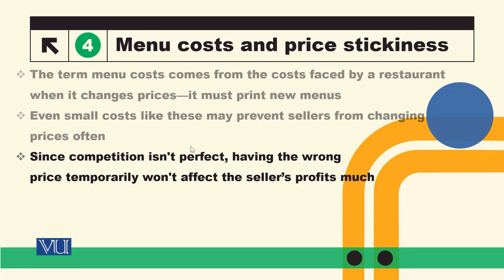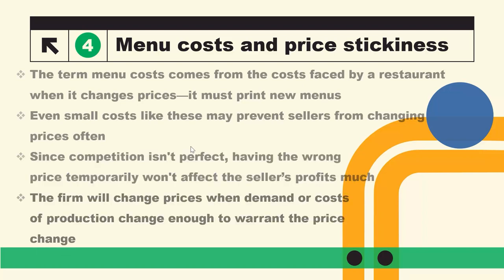Since competition is not perfect under monopolistic competition, having the wrong price temporarily would not affect the seller's profit much. In perfect competition, marginal cost equals price, but in monopolistic competition that condition does not hold. So if the price is slightly off, the firm can afford it. The firm will change prices only when demand or cost of production changes enough to warrant the price change.